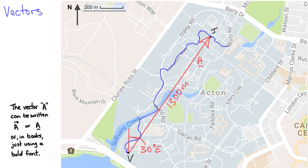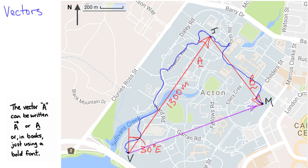Now suppose Joe and I decide to go get a coffee. Our usual places are closed for the summer break, so we head all the way over to the music school. Let's call the displacement from Joe's office to the music school the vector B. Then the overall displacement from my office to the music school is the vector A plus B, shown by the purple arrow here.